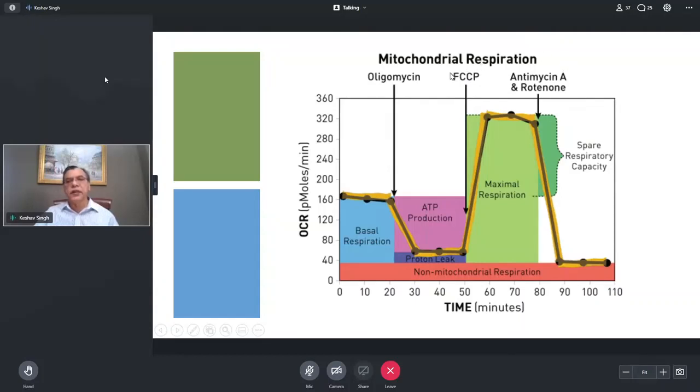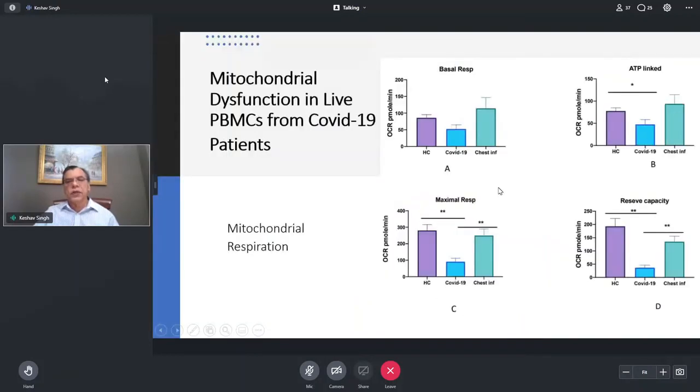So what I'm showing you here is that using the mitochondrial respiration using the seahorse we measured the mitochondrial respiration and the way you can do it is you can use inhibitors oligomycin, FCCP that gives you the ATP production and then you can use the antimycin A and rotenone and that gives you the maximal respiration as well. So we measured that in the PBMCs directly and what I'm showing you is that mitochondrial respiration data.